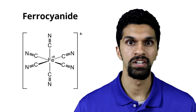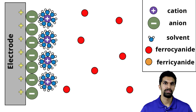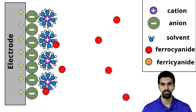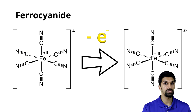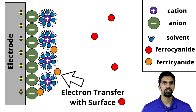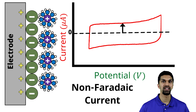Our cyclic voltammogram gets much more interesting when we add our redox active molecule ferocyanide to the electrolyte solution. As we sweep the potential, it will become sufficiently positive that ferocyanide will undergo an electron transfer with the electrode surface. Specifically, ferocyanide will oxidize — or lose an electron — to the electrode surface, becoming ferricyanide. Whenever there is an electron transfer with the electrode surface, current will flow in our electrochemical cell. This current is referred to as Faradaic current, named in honor of famous electrochemist Michael Faraday, in contrast to the non-Faradaic current associated with double layer charging, where no electron transfer occurs at the electrode surface.